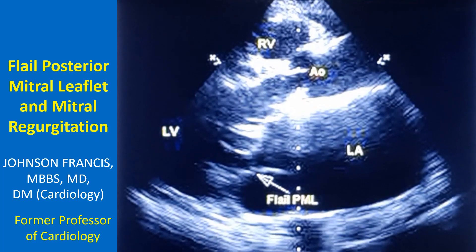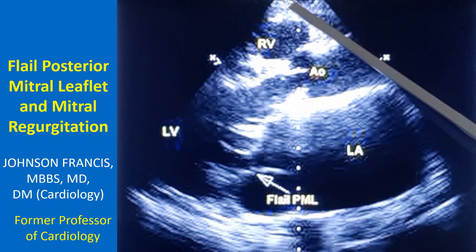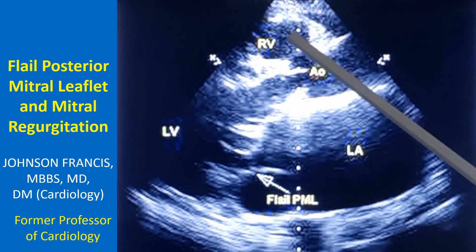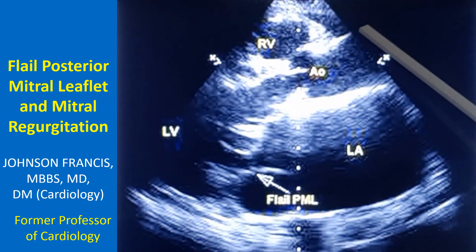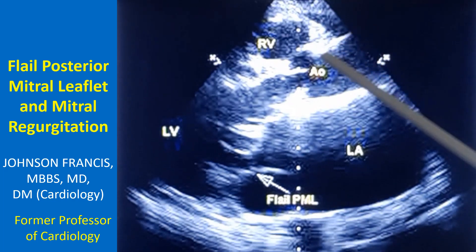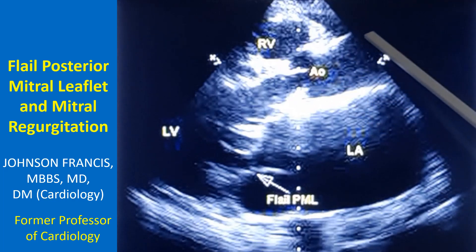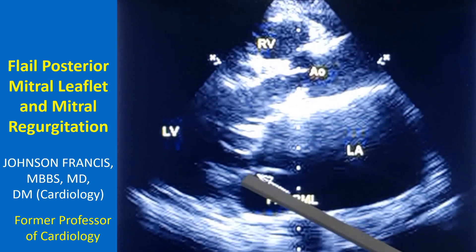This is an echocardiogram in the parasternal long axis view. The transducer is kept on the anterior chest wall and the echo beam is parallel to the long axis of the heart. The long axis of the heart is the base to apex axis.